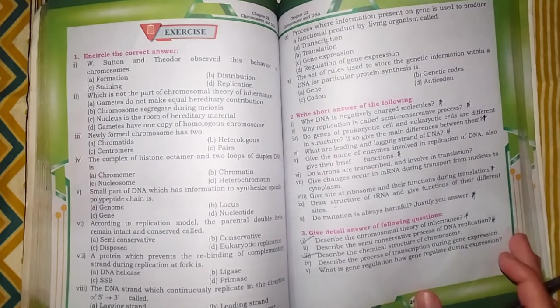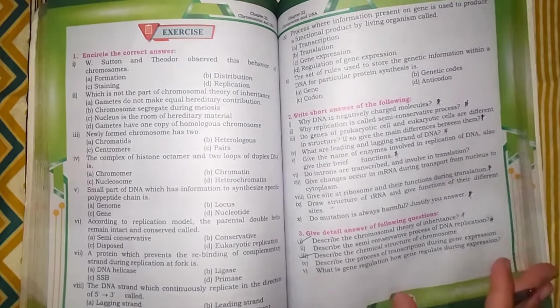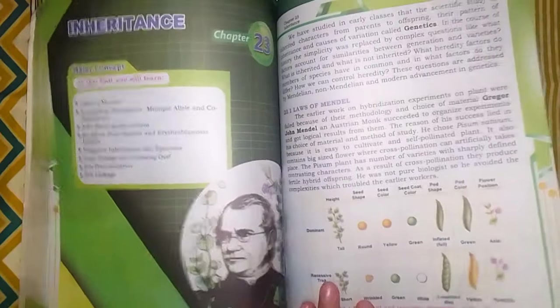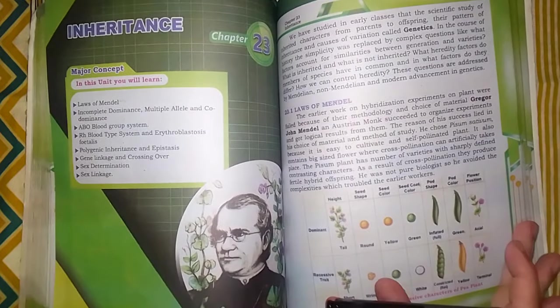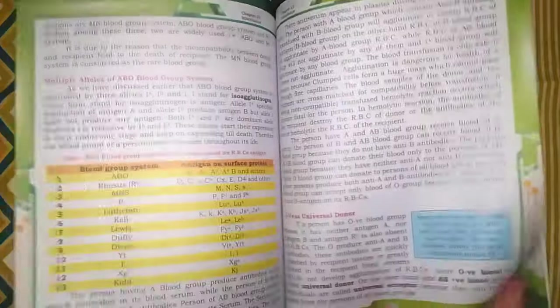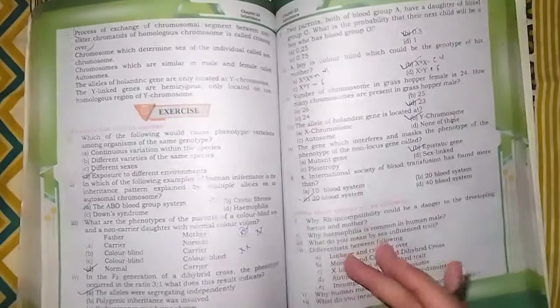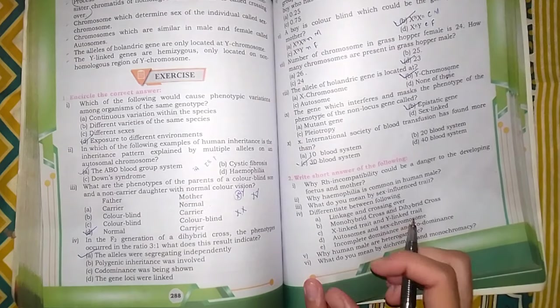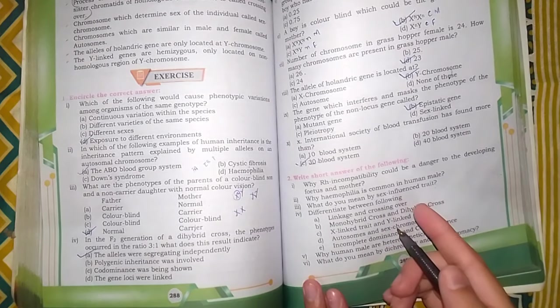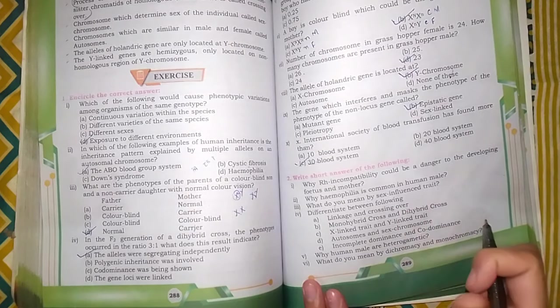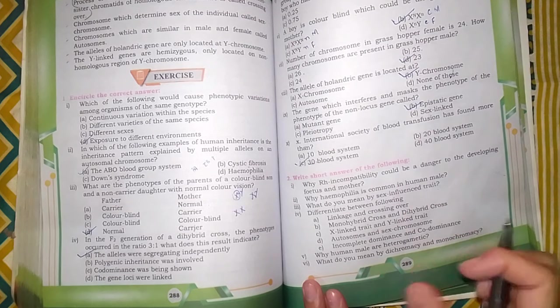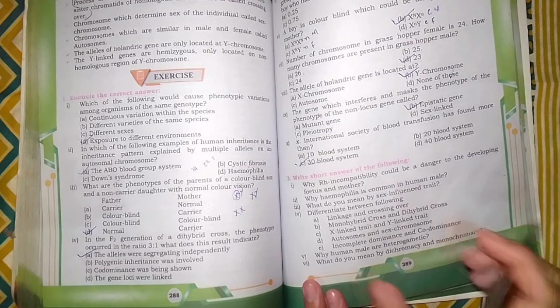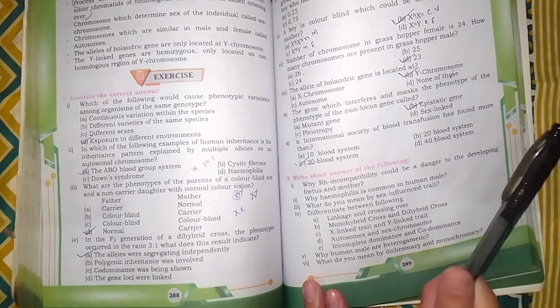These questions are most important for your board exam 2024, especially chromosomal theory of inheritance in short and long. I have told you all the definitions you need to do. I will not tell you which are important or not.